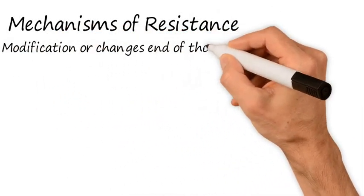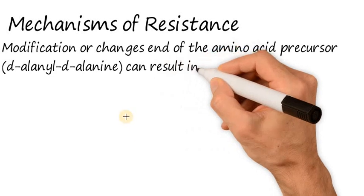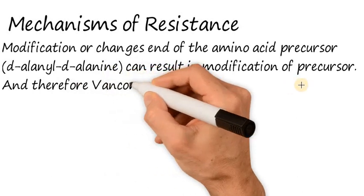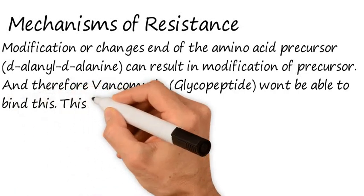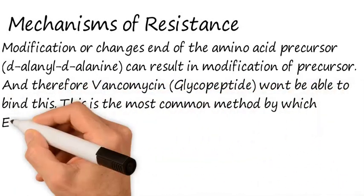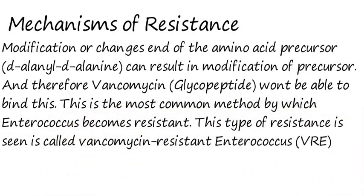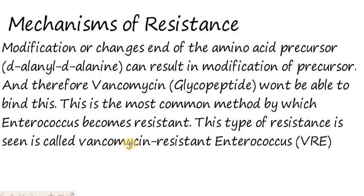We have various reasons for resistance that bacterium can develop. Modification or changes of the amino acid precursor D-alanyl-D-alanine can result in modification of the precursor, and therefore vancomycin or glycopeptide will not be able to bind. This is the most common method by which Enterococcus becomes resistant. This type of resistance is commonly known as vancomycin-resistant Enterococcus (VRE).